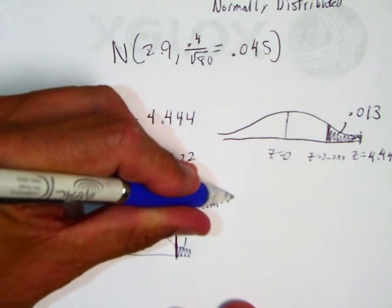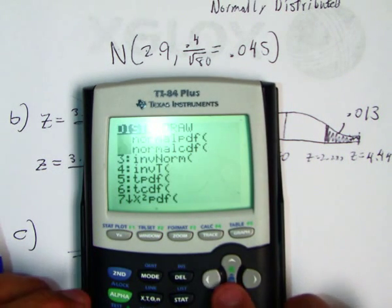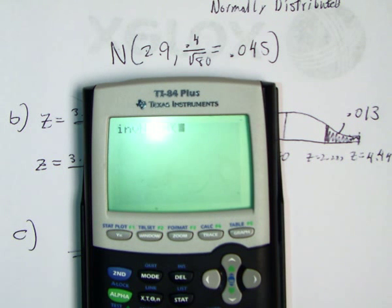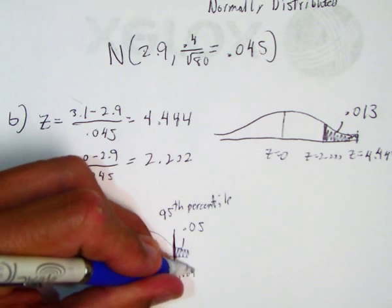Now I've got to turn that into a z-score. Let's go to my calculator - inverse norm of the 95th percentile. The calculator says it's 1.645, so z equals 1.645.